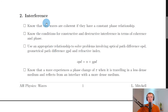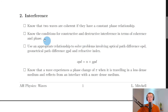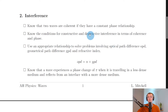Moving on to the second key area, interference. Firstly, you need to know that two waves are coherent if they have a constant phase relationship — this means the waves will have the same speed, frequency, and wavelength. You also need to know the conditions for constructive and destructive interference in terms of coherence and phase. We can only get interference if the waves are coherent; if they're not, we won't get an interference pattern. Constructive interference occurs when two waves meet in phase, whereas destructive interference occurs when two waves meet out of phase.